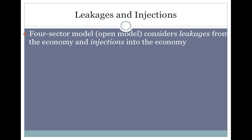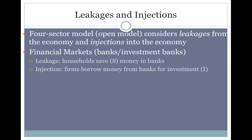Outside of the household and firms circular flow, the first way this happens is through financial markets. When you take your money to a bank and save it, that money is basically not spent — it would normally be spent, but instead it's saved, so it's almost like it has leaked out of the economy. However, when you save money in a bank, firms don't just let that money sit there — they lend a lot of it out.